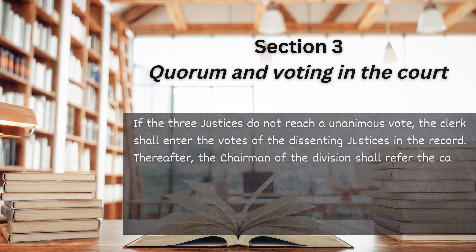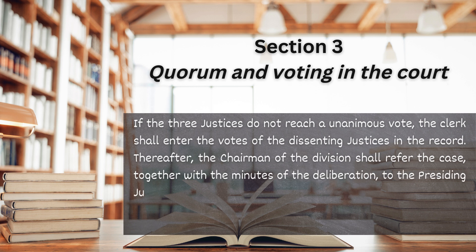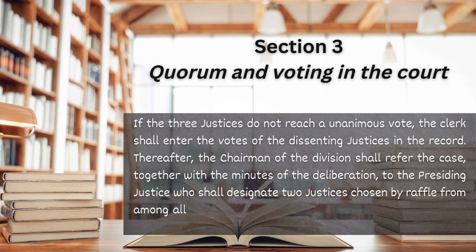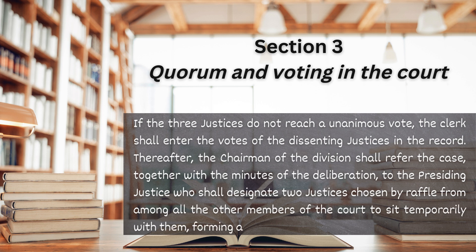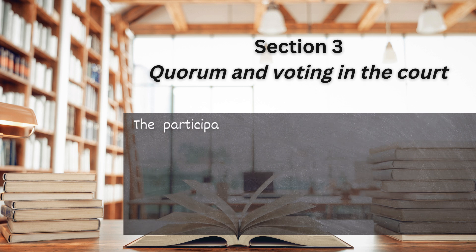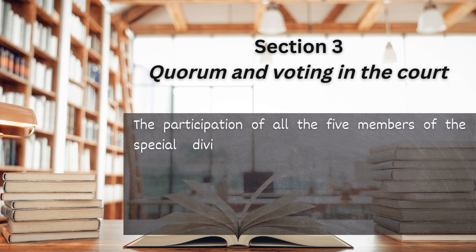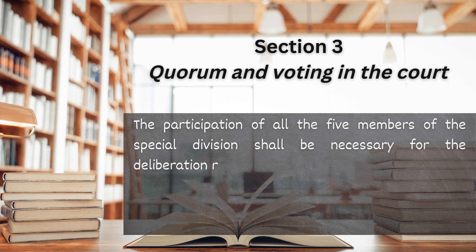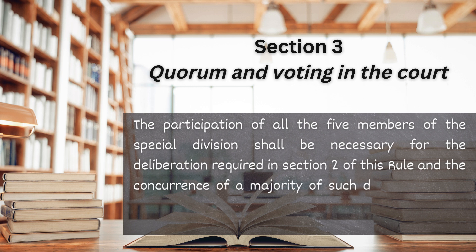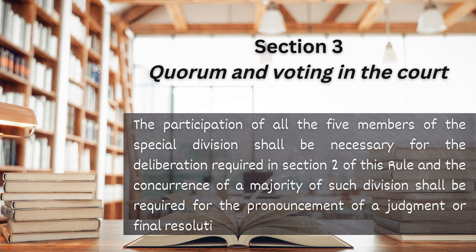Thereafter, the chairman shall refer the case, together with the minutes of the deliberation, to the presiding justice who shall designate two justices chosen by raffle from among all the other members of the court to sit temporarily with them, forming a special division of five justices. The participation of all five members of the special division shall be necessary for the deliberation required in Section 2 of this rule, and the concurrence of a majority of such division shall be required for the pronouncement of a judgment or final resolution.